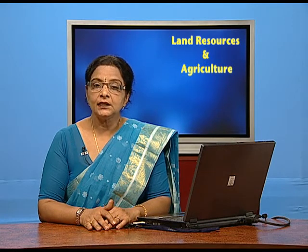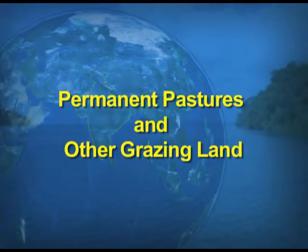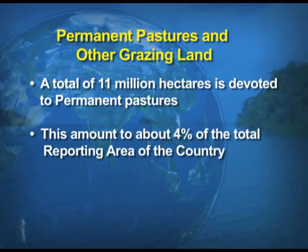The next category under land use is permanent pastures and other grazing land. A total of 11 million hectares is devoted to permanent pastures, and this amounts to 4% of the total reporting area of the country. The reporting area, as we have already discussed, is all the land uses put together.